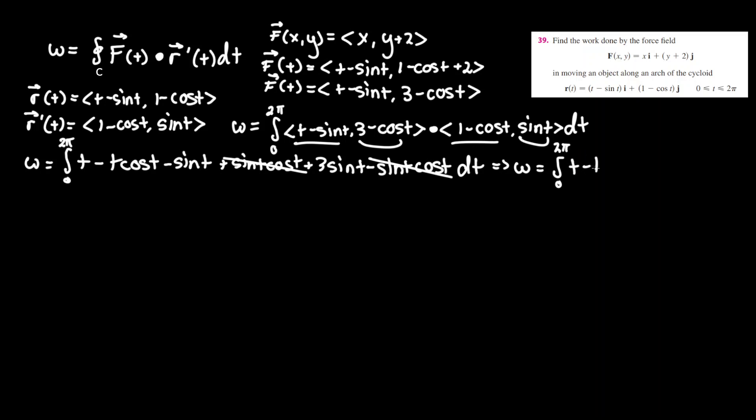And that leaves us with work equals integral between 0 and 2pi of t minus t cosine t. We can see also that there is a negative sine t and positive 3 sine t, so that simplifies to plus 2 times sine t. And that's everything, dt.